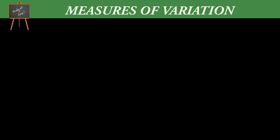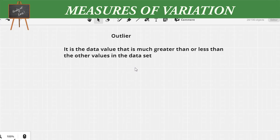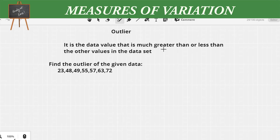The next topic is the outlier. An outlier is a data value that is much greater than or less than the other values in a data set. In order to understand it better, let's do an example and learn how to find the outlier in a given set of data.